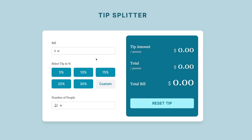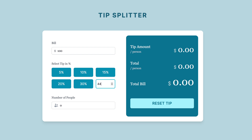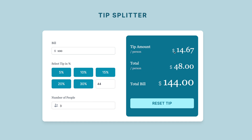In today's video, we're going to build a tip calculator using Next.js and Tailwind CSS. You can enter the bill amount, select a tip including a custom tip like 44%, and specify the number of people. The app will automatically calculate the tip per person, the total per person which includes the regular bill plus the individual tip, and the total bill for everyone. We'll be using Next.js 13, the current latest version, which uses the app router and server and client components.